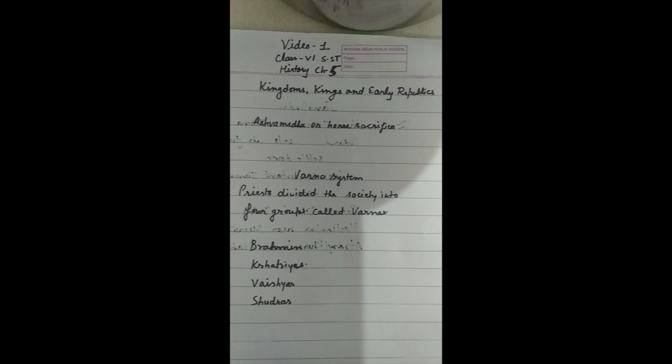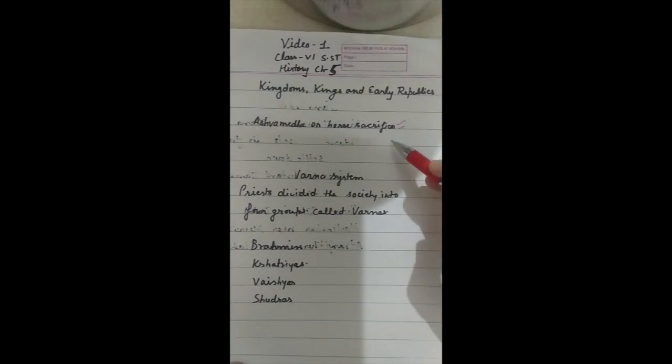Some men now became recognized as Rajas by performing various sacrifices. The Ashmedha or horse sacrifice was one such sacrifice.